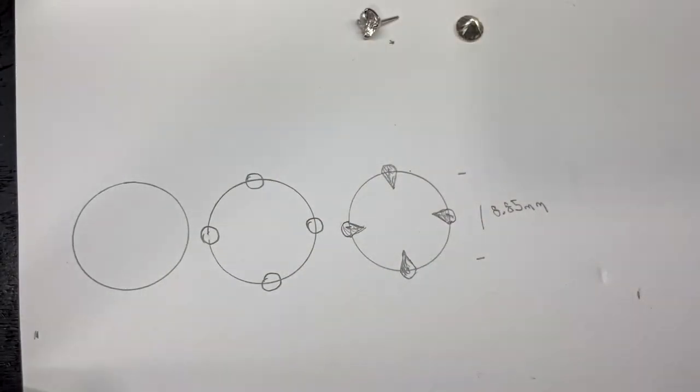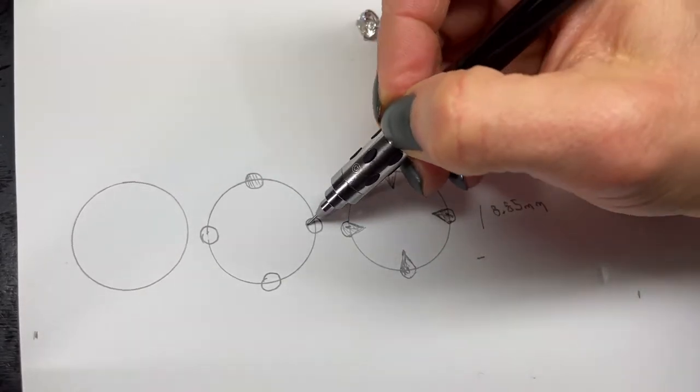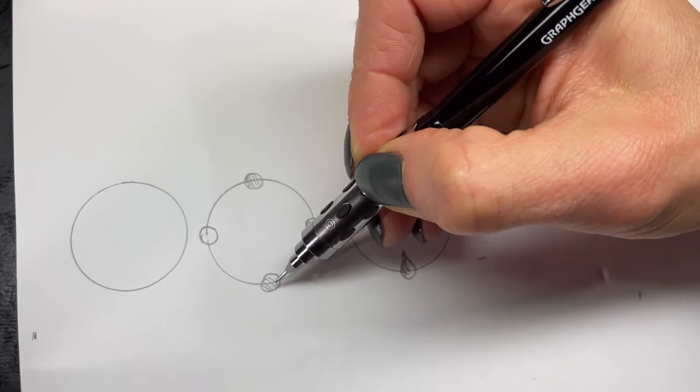So these are the two options of prongs. You can just kind of color it in and you can get an idea.